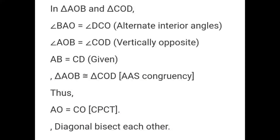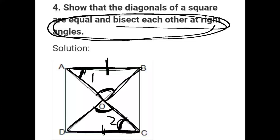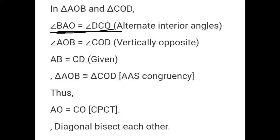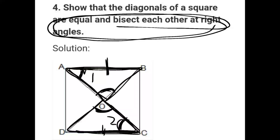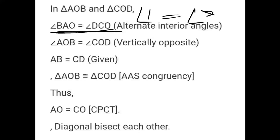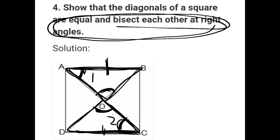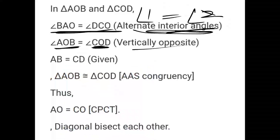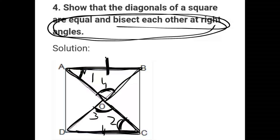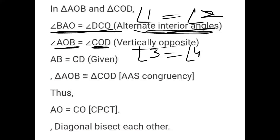So we have three conditions. Number one: angle 1 equals angle DOC — that is angle 2 — because they are alternate interior angles. Then angle 3 equals angle 4, vertically opposite angles. Then AB line equals CD — this is given. So three conditions are here: angle, angle, side.